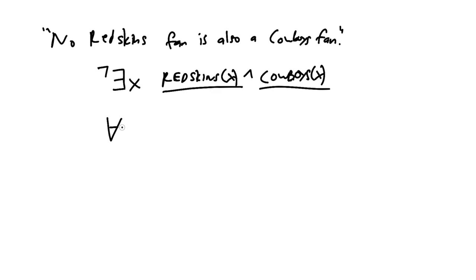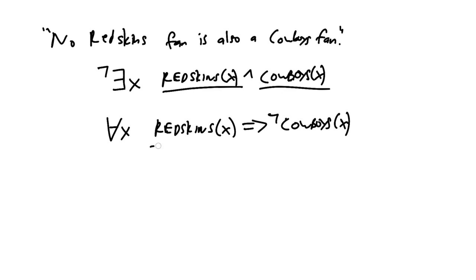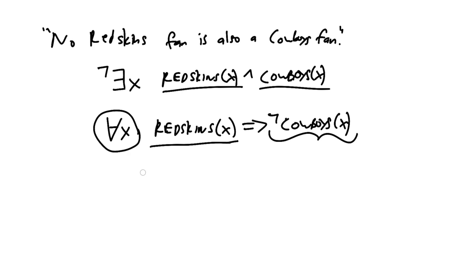Another correct answer would be: for all X, Redskins(X) implies not Cowboys(X). This says if you are a Redskins fan, that implies you are not a Cowboys fan—those two things cannot both be true, and that is true for all X. Note that we've assumed we're only dealing with humans. If it were possible for some other being to be a fan and the statement was only true for humans, we would need to add human(X) or specify the domain appropriately.